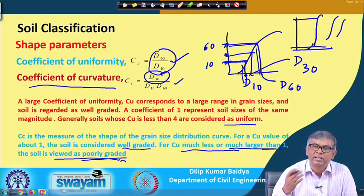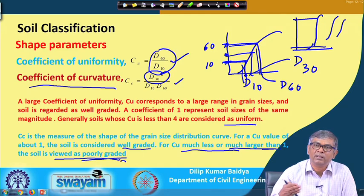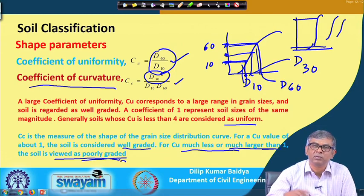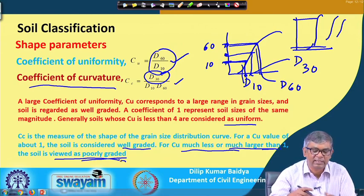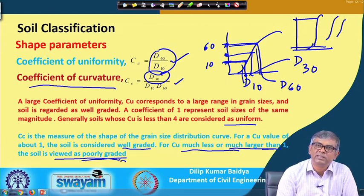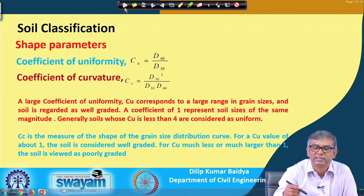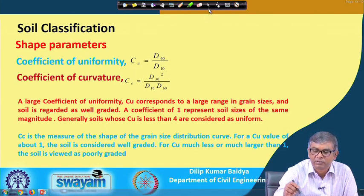Well graded and poorly graded — a uniform soil can also be classified as poorly graded. Sometimes a soil has particles of many sizes but one or two particle sizes are totally missing; those soils can also be treated as poorly graded. Based on Cu and Cc we get this information, which helps assess the other strength characteristics of the soil.